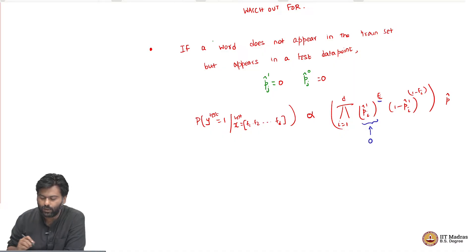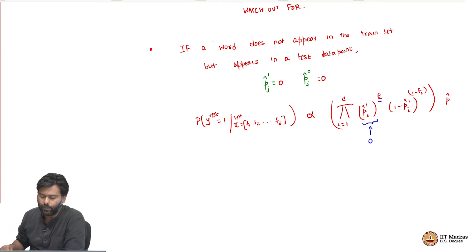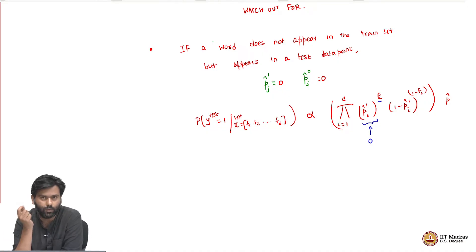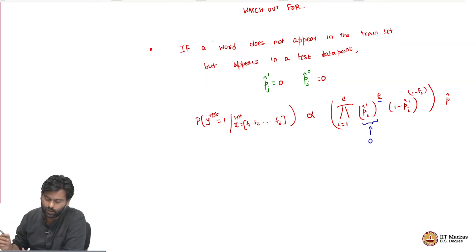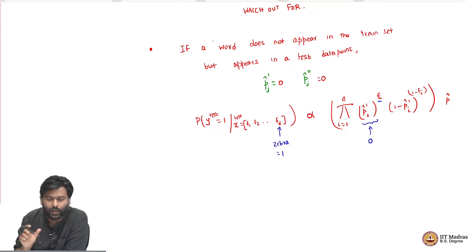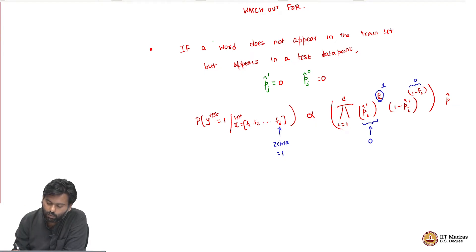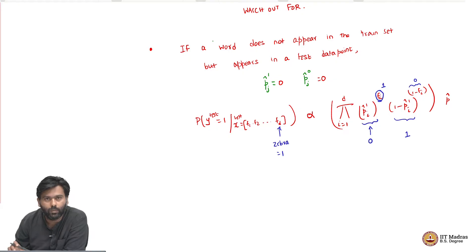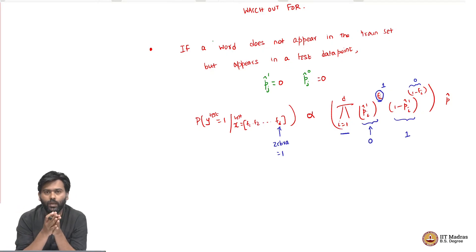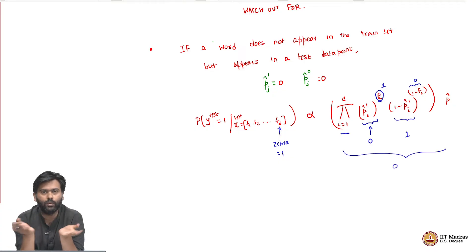So p-hat-1i is 0, and f_i is 1 because the word appears in the test data point. This means I multiply by the probability that it appears — which is 0. The other term (1 minus p-hat-1i) to the power (1 minus f_i) becomes 1 minus 0 to the power 0, which is 1 power 0, which equals 1. But the first term is 0. Since we are doing a multiplication, one term being 0 makes the whole product 0.